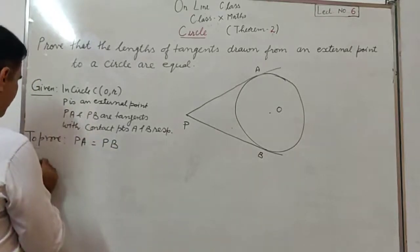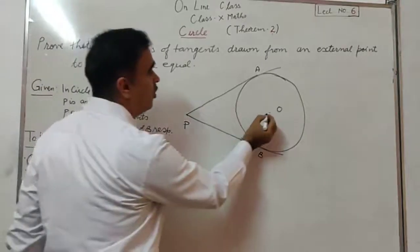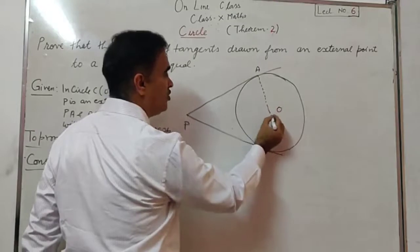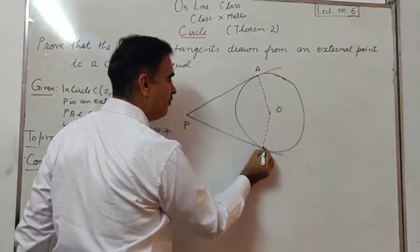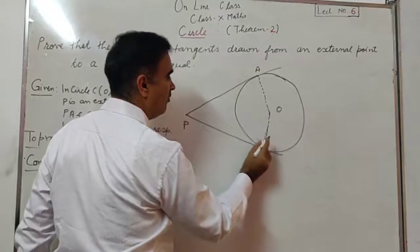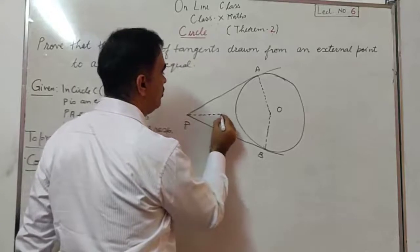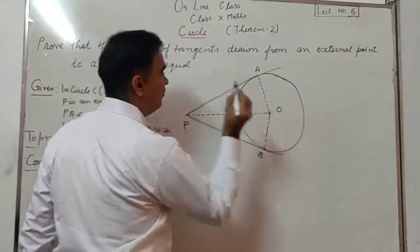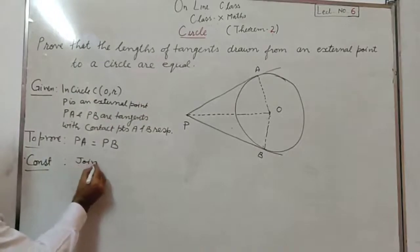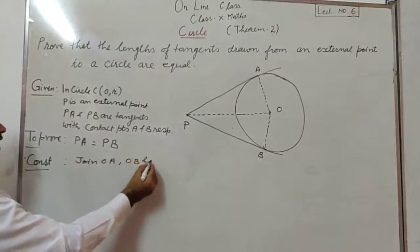We have to prove PA equal to PB. For construction, we join OA, join OB, and join OP.